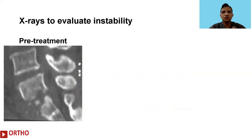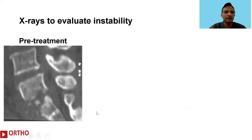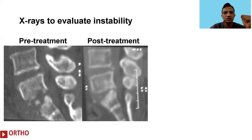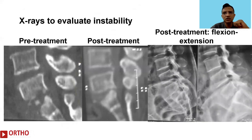We also use x-rays primarily to evaluate instability. Here is a patient who had features of post-operative infection at the L5-S1 level with significant osteolysis before treatment. At the end of treatment, the CT scan showed good resolution of the bone defect, but not adequate enough to determine whether the spine was stable or not. In these situations we resort to flexion-extension x-rays to clarify spinal stability.